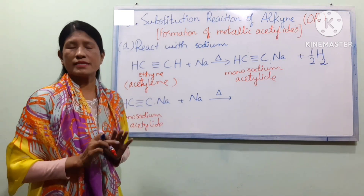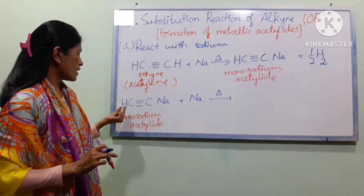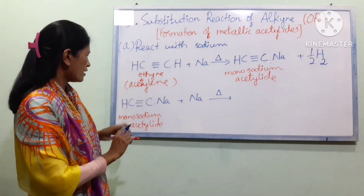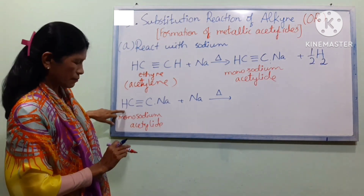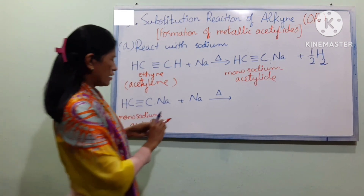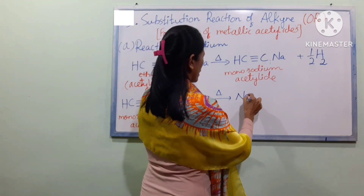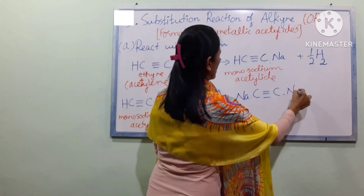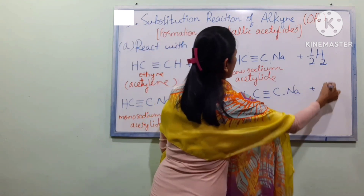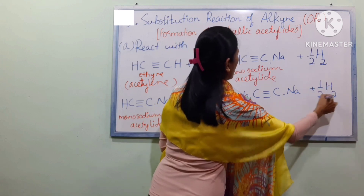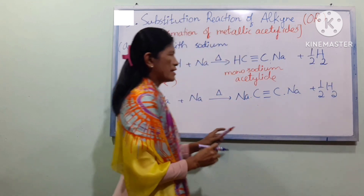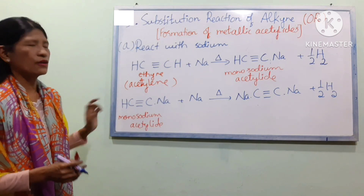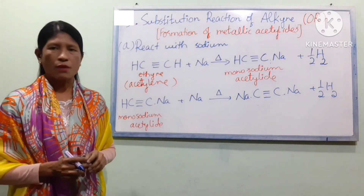Na-C≡C-Na plus H2. You can use H2 and Na to form the product.